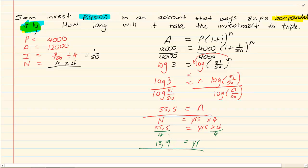Which gives me that my years is equal to 13.9 years. If I want to change my .9 to months, I am going to say 0.9 times 12, which is equal to 11 months. So my answer is 13 years and 11 months.